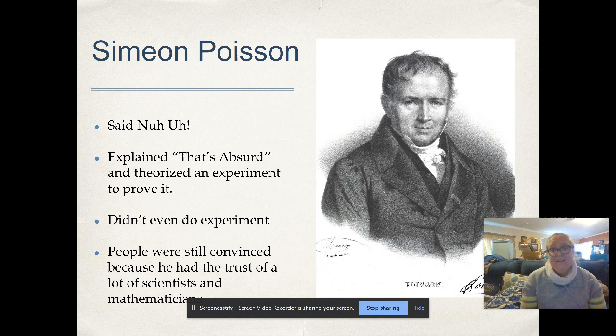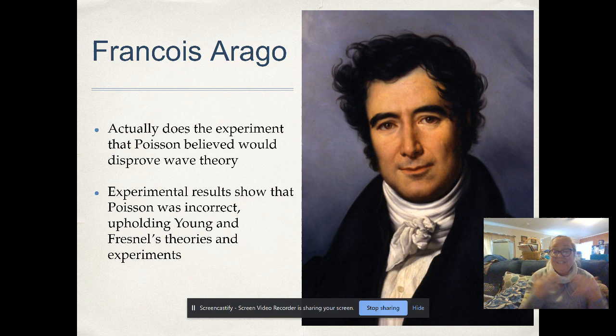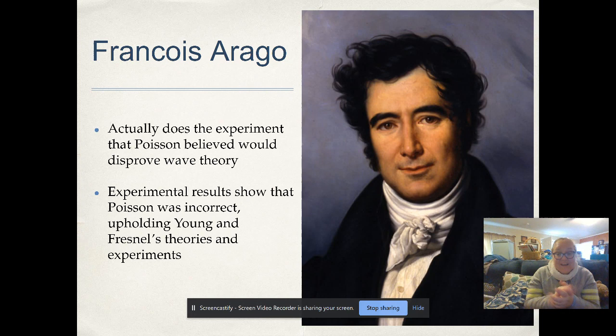Then there's Siméon Poisson — known for the Poisson distribution in statistics — who said the wave idea was absurd and proposed an experiment he believed would disprove it. Because he was so renowned, people trusted him and believed light was a particle. But François Arago actually performed Poisson's experiment, and it didn't work as Poisson predicted — supporting the wave theory instead.